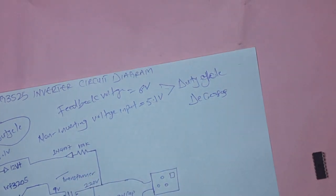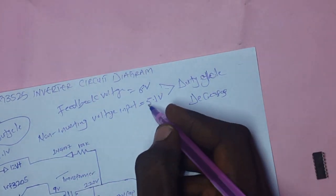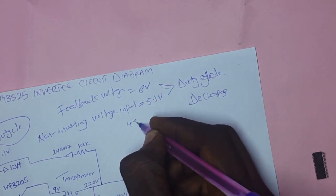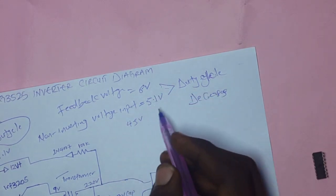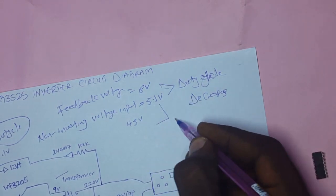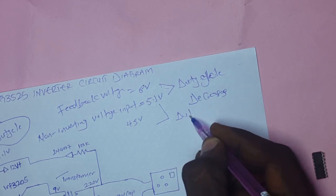Are you getting me? But if the feedback voltage is 4.5 volts, the duty cycle will increase.